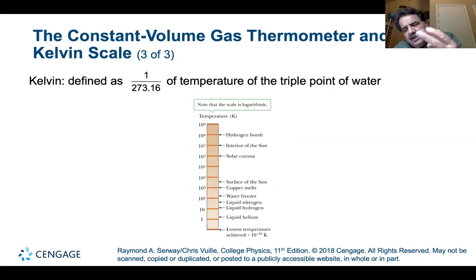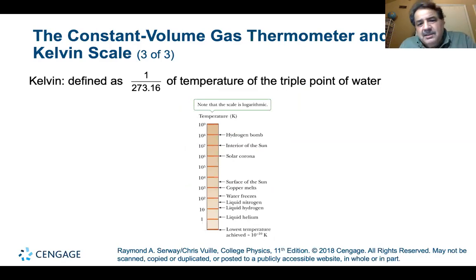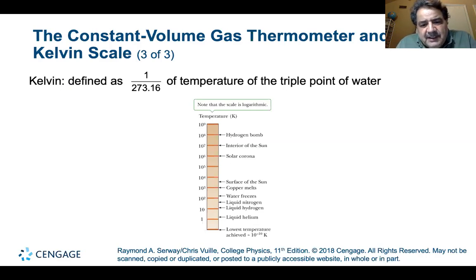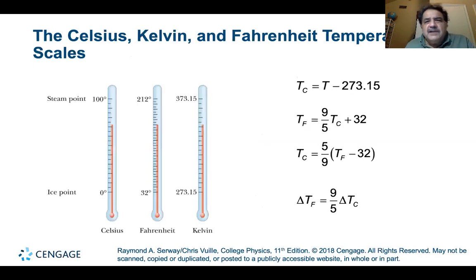The triple point of water is where you can have ice, vapor, and liquid water simultaneously. Here are some temperature scales — note the scale is logarithmic: a hydrogen bomb is ~10⁸ K, the interior of the Sun is ~10⁷ K, copper melts at ~10³ K, water freezes at 373 K, and liquid nitrogen is lower still.